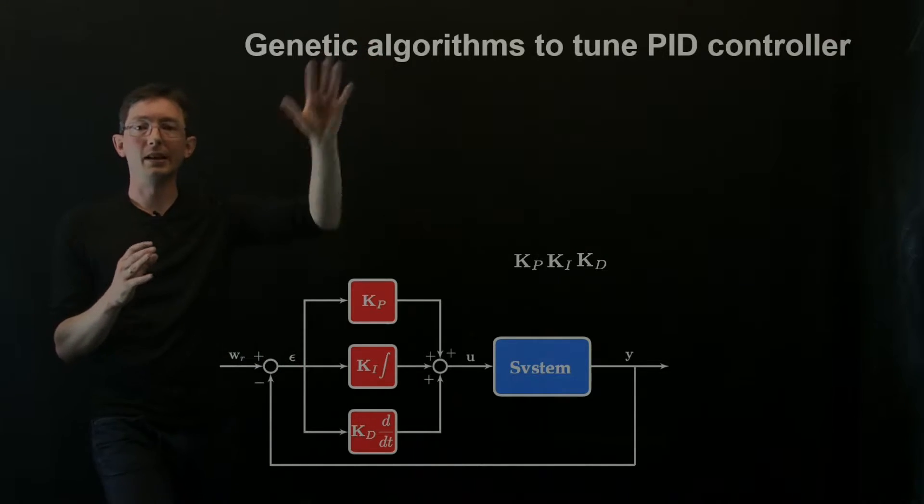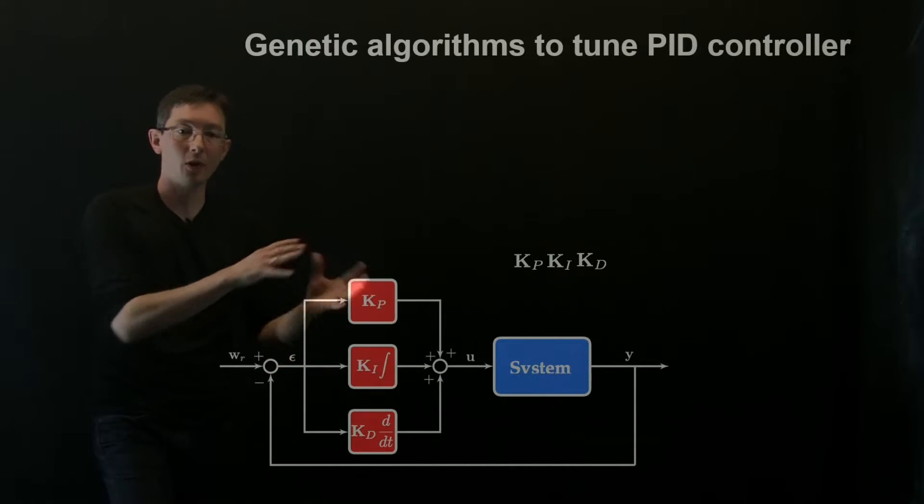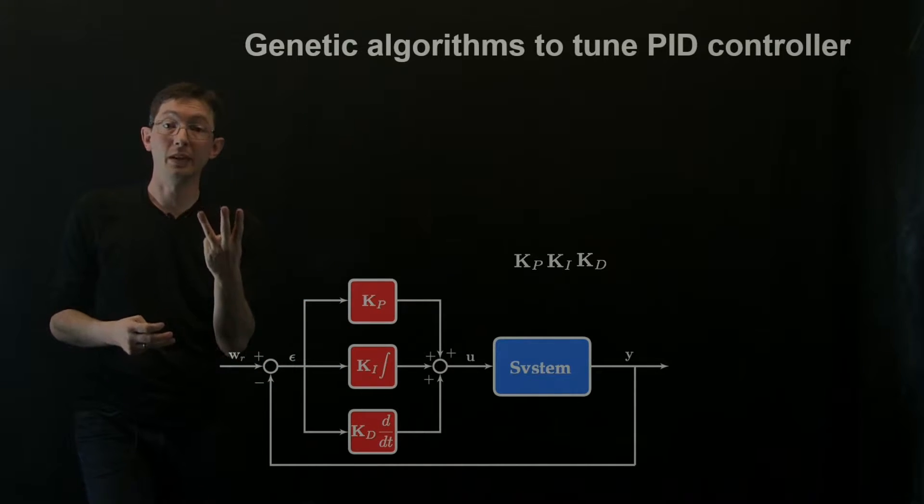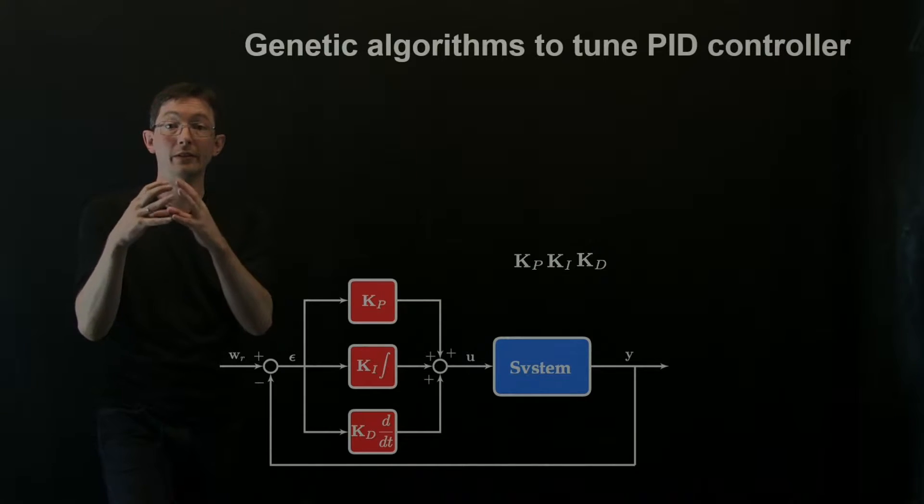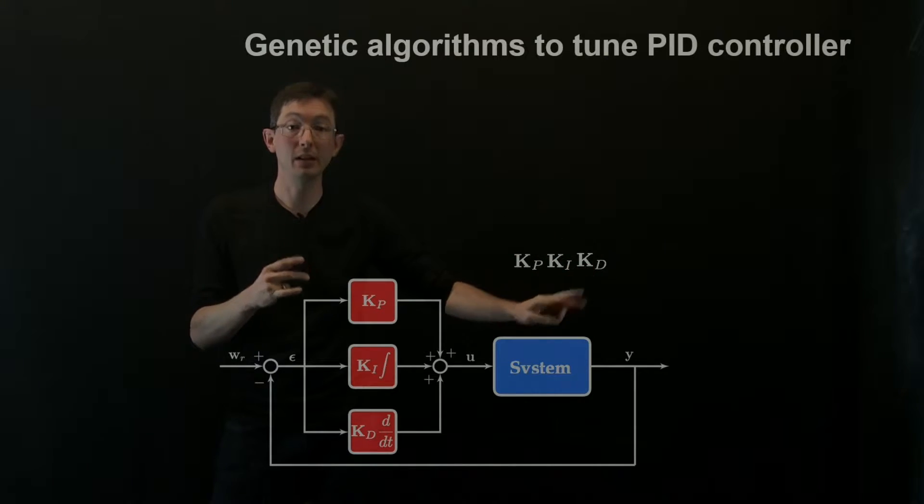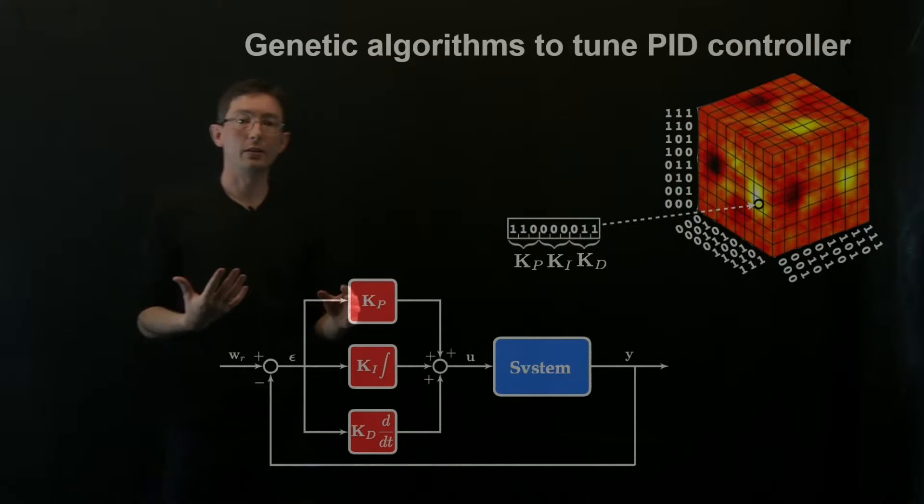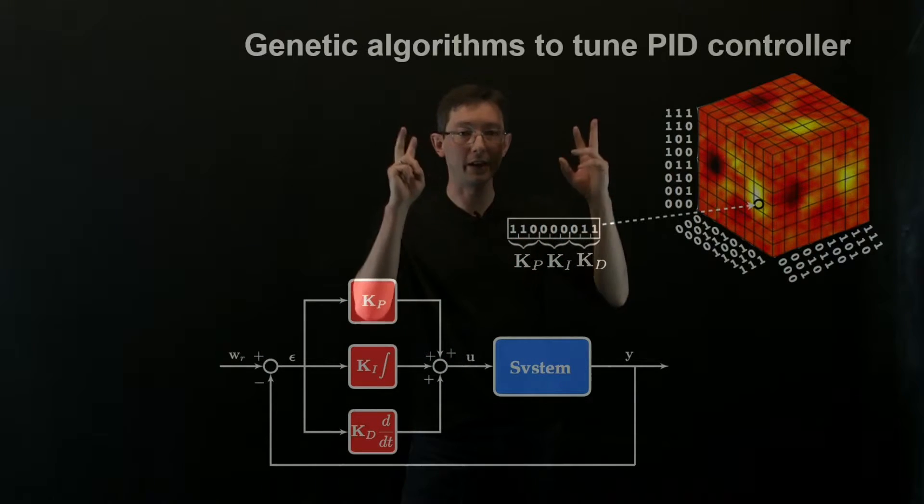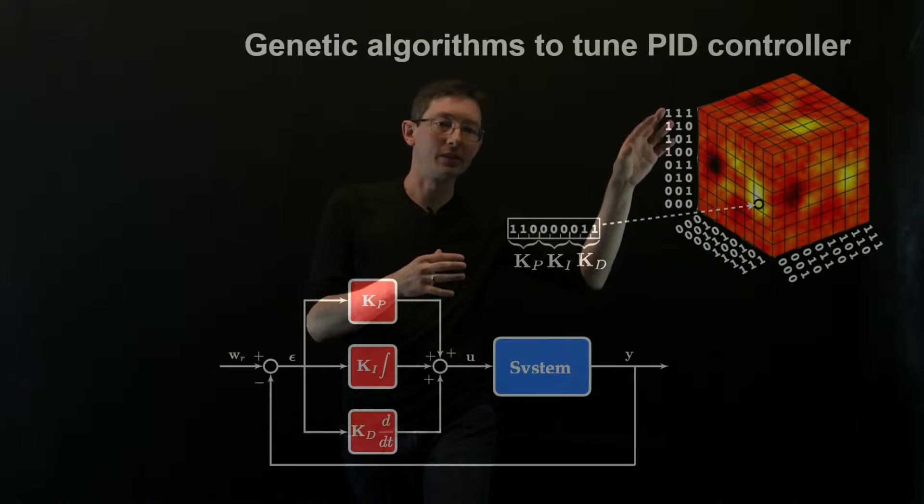And so what the genetic algorithm does is it assumes a structure for your control law. In this case, we have locked in, we've hard coded the PID structure, this topology here, and we've made it so that there are three numbers that we get to optimize, KP, KI, and KD, these proportional integral and derivative gains. And that's all that genetic algorithms knows about is that there are these three numbers that it gets to tune to get better performance. And so the first step in a genetic algorithm, once you have the structure locked in, is to somehow turn those numbers into a genetic sequence. This is supposed to mirror DNA, the DNA of the controller now. And here I'm oversimplifying this into bits. These kind of three bit representations of KP, KI, and KD just for pictorial purposes.